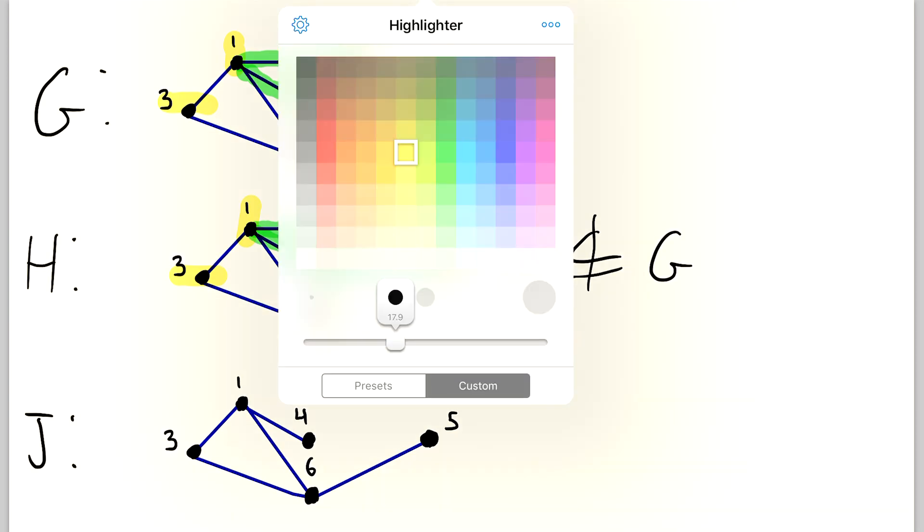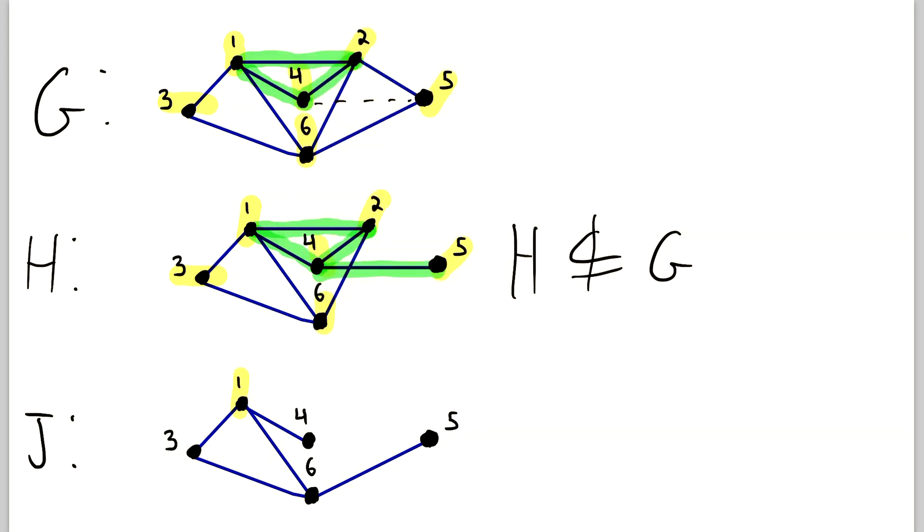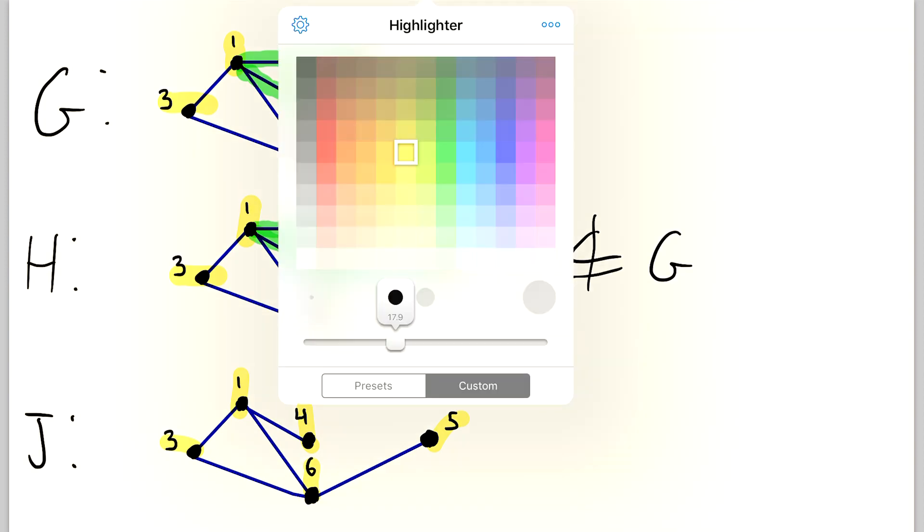So again, we'll look at the vertex set. And J has vertices 1, 3, 4, 5, and 6. And we already know that all of those vertices are also in G. So, so far, so good. And then again, I'll highlight in green, we'll look at the edges.